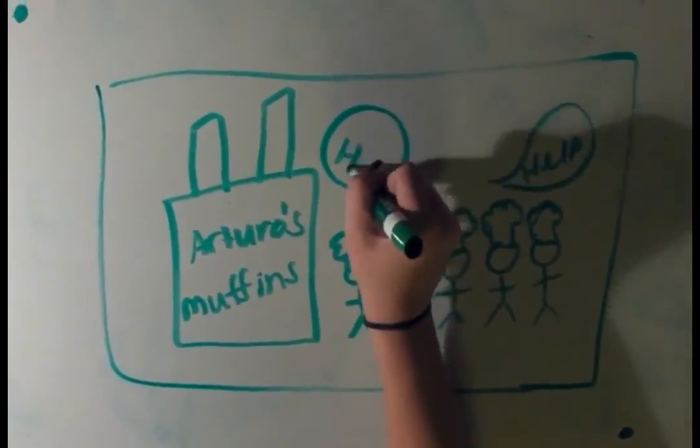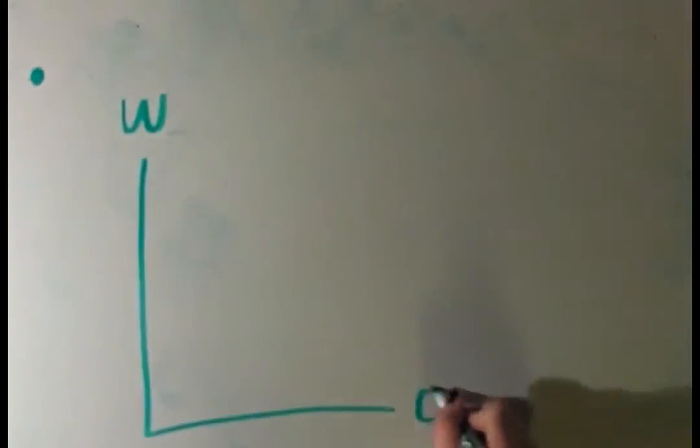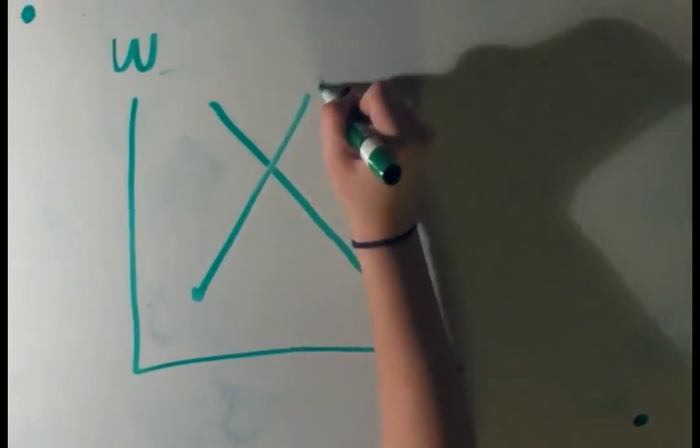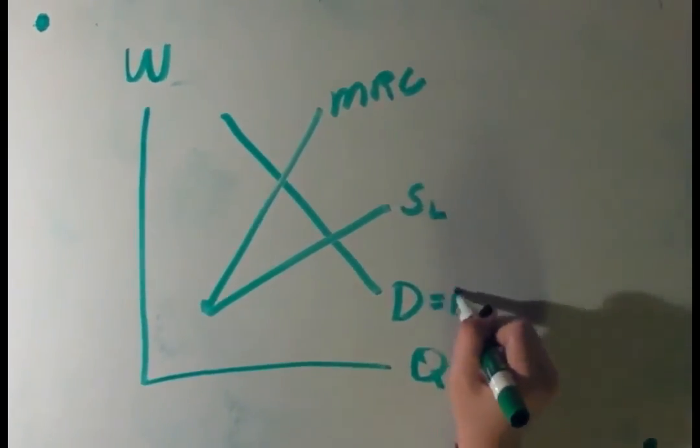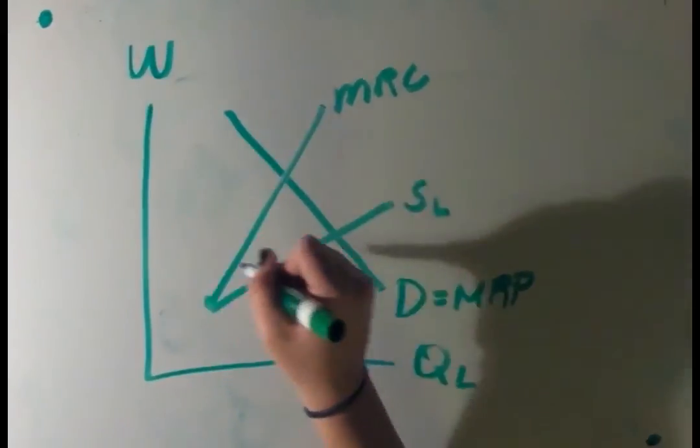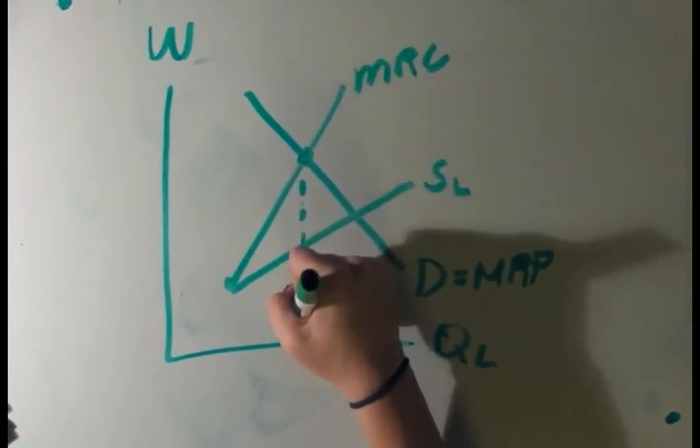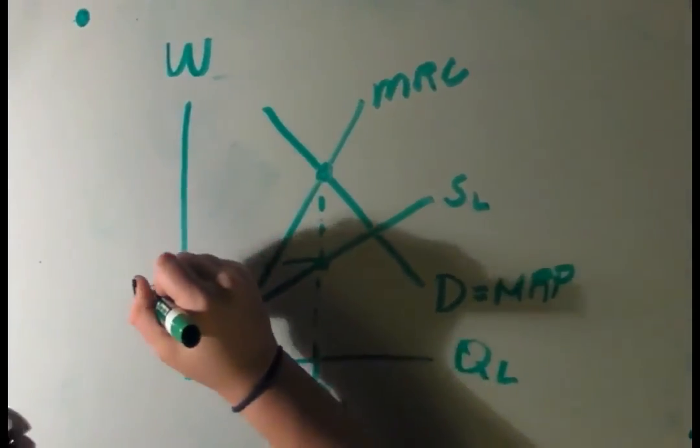If Arturo wants to hire more workers, he has to increase their wage, resulting in an upward-sloping MRC curve and supply line. But demand is still the same as a perfectly competitive market. And just like in a perfectly competitive market, the quantity of labor is where MRC and MRP cross. However, the price at which a monopsony pays its workers is the point on the supply curve directly beneath where MRP and MRC cross.